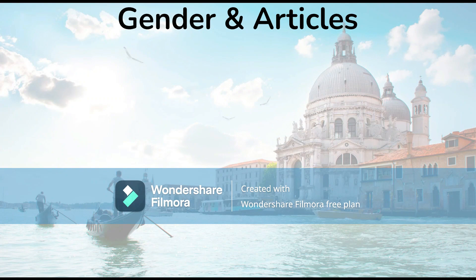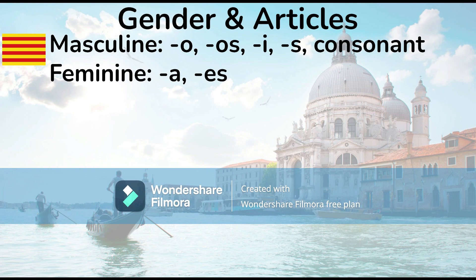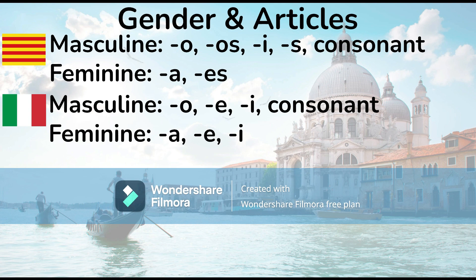Gender and articles: In Catalan, most masculine nouns end in O, I, or a consonant, and S or Os is usually used to indicate the plural. In the feminine, it's A in the singular but Us in the plural. In Italian, O, E, or a consonant denotes masculine, and A represents feminine in the singular, but E is used to indicate plural in both cases.